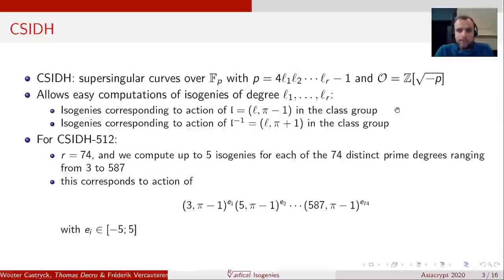If you don't know what this means exactly, it doesn't matter much, just remember that for every prime L_i there are two isogenies that are easy to compute, and they are each other's inverses. For CSIDH-512, the lowest security parameters, we have R equals 74, which means we have 74 distinct prime degrees ranging from 3 to 587. And for each of these primes L_i, we will compute up to five isogenies. This isogeny corresponds to the action of this ideal in the class group, where all the exponents E_1 up until E_74 are integers sampled from this interval.